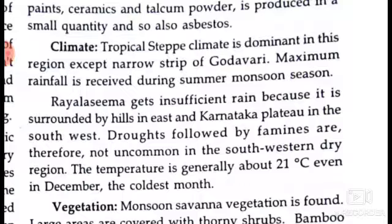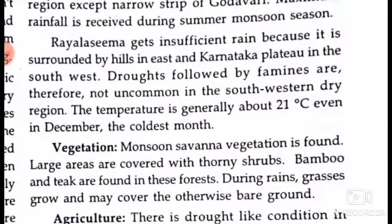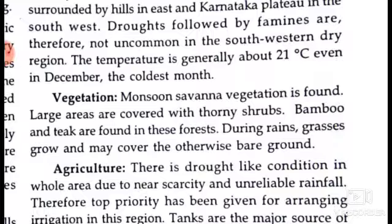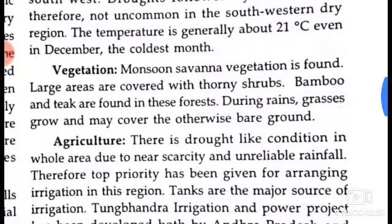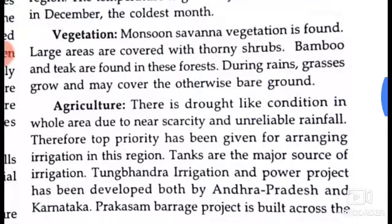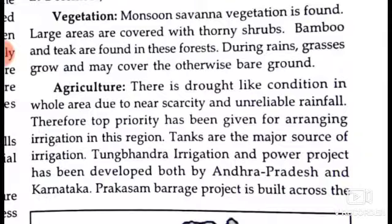Droughts followed by famines are therefore not uncommon in this extremely dry region. The temperature in winter is generally about 21 degrees centigrade, even in December, the coldest month. Large areas are covered with thorny shrubs, bamboo, and antique trees found in the forest. During rains, grasses grow and may cover the otherwise bare ground.